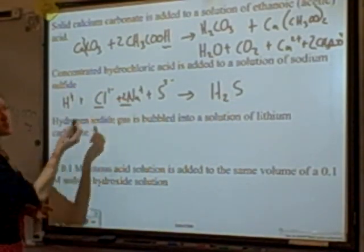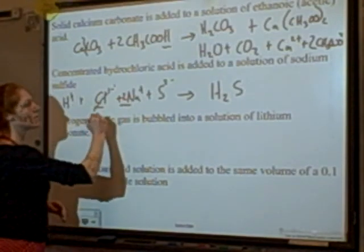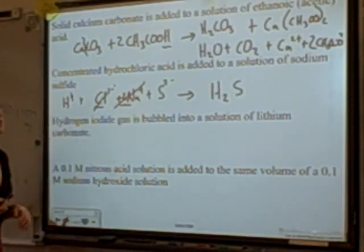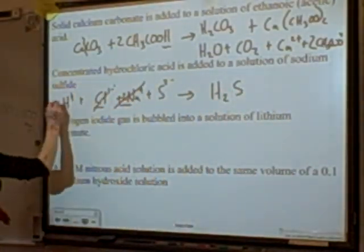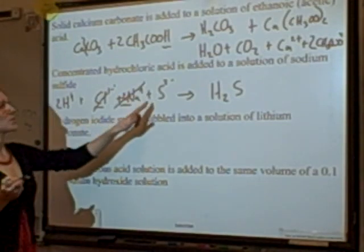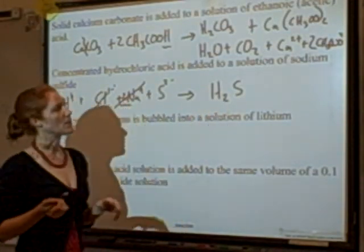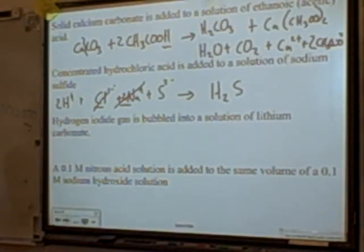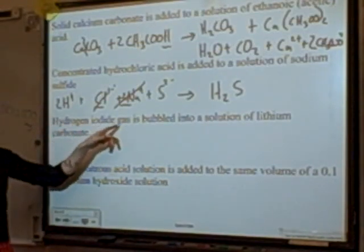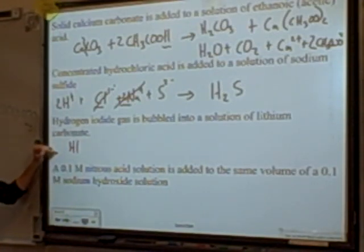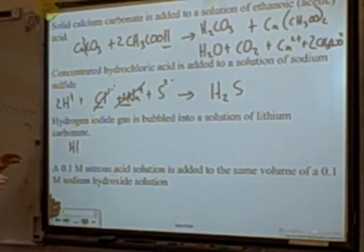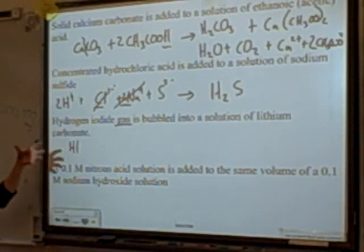The net ionic equation is: 2H+ + S2- → H2S. Next: hydrogen iodide gas, HI. You might recognize it as a strong acid — and it is — but here it's a gas, so it's written together as HI(g), not as dissociated ions. Hydrogen iodide gas is bubbled into a solution of lithium carbonate.